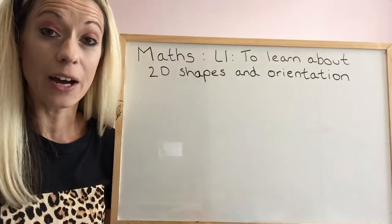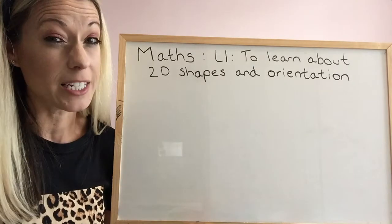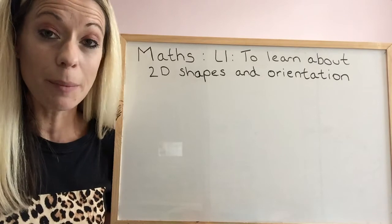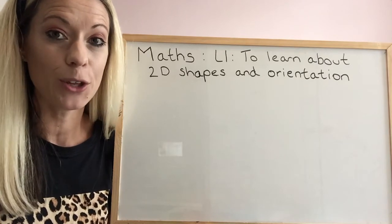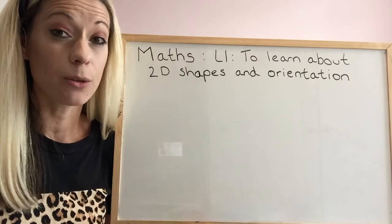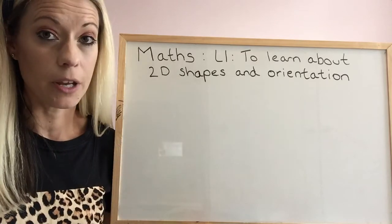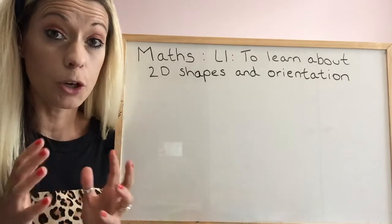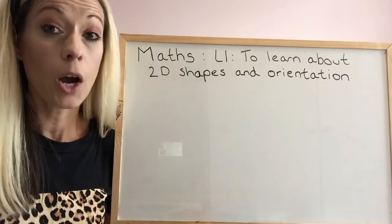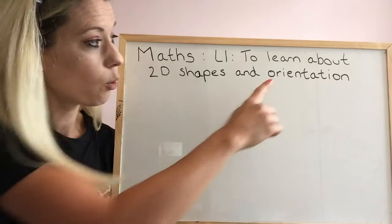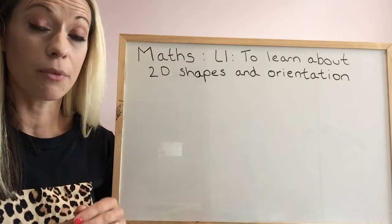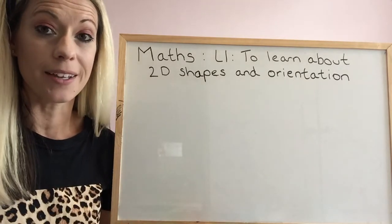So you try it now with an object. Maybe as a challenge you could even try it going anti-clockwise — maybe write and tell your teacher about it on the Google Classroom. So what have we learnt about classifying in our previous videos? It's about grouping things together that have similar properties. What have we learnt about orientation? It's about how you position something and rotate it in different ways.